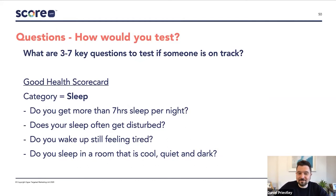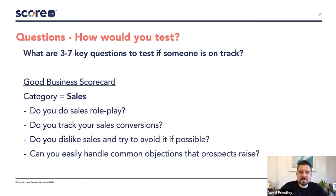The questions need to be simple questions that test for that category. If the category was sleep, you might ask: do you get more than seven hours of sleep per night? Does your sleep often get disturbed? Do you wake up feeling tired? Do you sleep in a room that's cool, quiet, and dark? For a good business scorecard under sales, questions might include: do you do sales roleplay? Do you track your sales conversions? Do you dislike sales and try to avoid it if possible? Can you easily handle common objections that prospects raise?